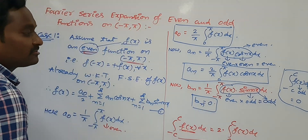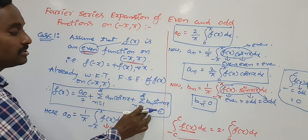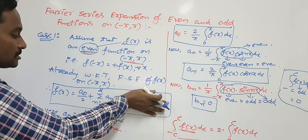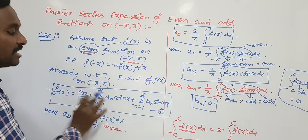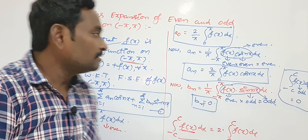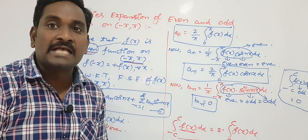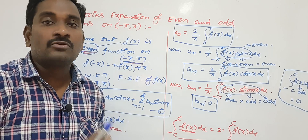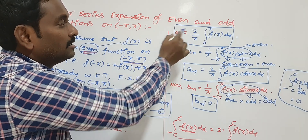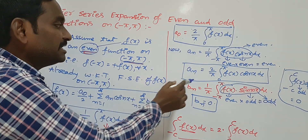If we replace bₙ = 0 in the Fourier series formula, the last term becomes 0. So the Fourier series has only a₀ and aₙ values. It means that if f(x) is an even function on (-π, +π), then its Fourier series has only cosine terms. It is enough to find the values of a₀ and aₙ. a₀ = (2/π)·∫₀^π f(x) dx and aₙ = (2/π)·∫₀^π f(x)·cos(nx) dx.